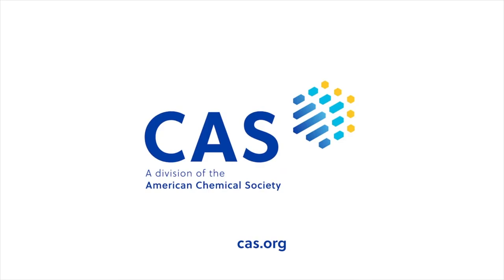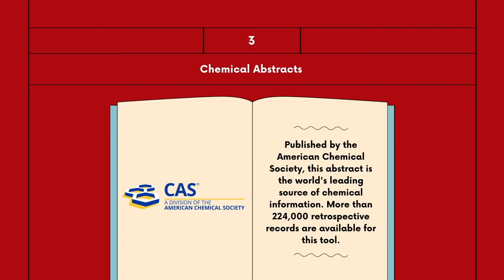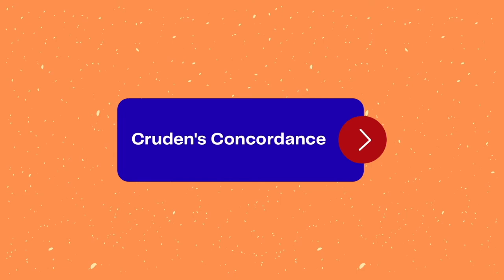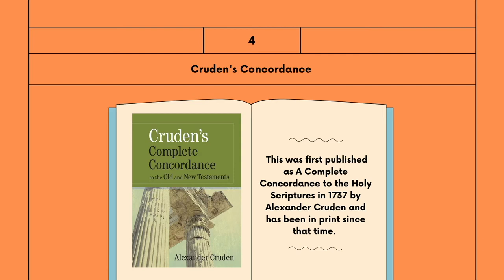Chemical Abstracts, published with the American Chemical Society, is the world's leading source of chemical information. More than 224,000 retrospective records are available for this tool. This can be found at www.casi.caz.org. Cruden's Concordance was first published as a complete concordance to the Holy Scriptures in 1737 by Alexander Cruden and has been in print since that time. It is currently available through various publishers. In 2011, the University of California Libraries published a new edition.